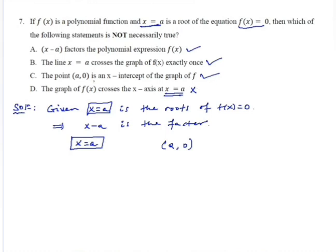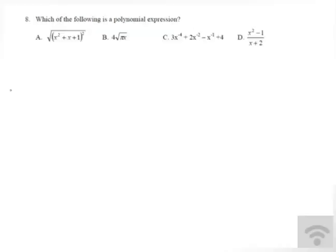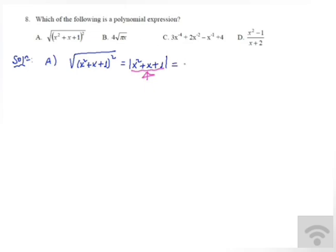Which of the following is a polynomial expression? The absolute value of x squared plus x plus 1: since x squared plus x plus 1 is always positive for any x, we can drop the absolute value and take x squared plus x plus 1 as it is. This is a polynomial function of degree 2, so this is a polynomial expression.